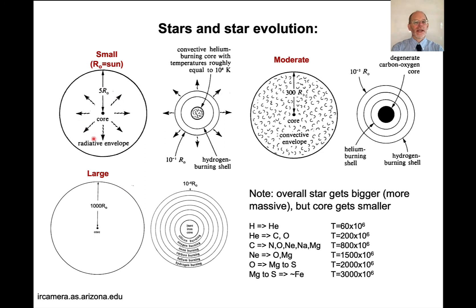And so here's an example of what these things look like. So here is a small star like our sun. The R-naught is the radius of the sun. So this one is actually bigger than ours. And it has a little core and it has a radiative envelope. But if you look at the core, there's a hydrogen burning shell. And there's a helium burning shell.